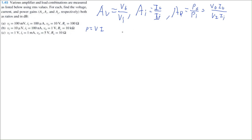If we want to convert any of these values to dB, we take 20 and multiply it by log base 10 of the absolute value of that respective gain.